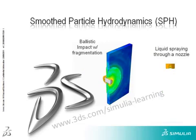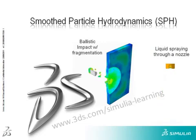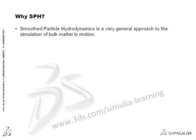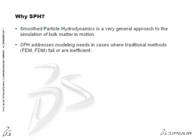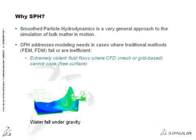Smoothed Particle Hydrodynamics, referred to as SPH, is a modeling technique available in Abaqus Explicit. SPH is a very general approach to the simulation of bulk matter in motion. It addresses modeling needs in cases where traditional methods fail or are inefficient, such as in the simulation of extremely violent fluid flows where mesh or grid-based computational fluid dynamics cannot cope.